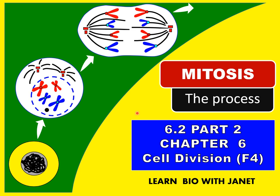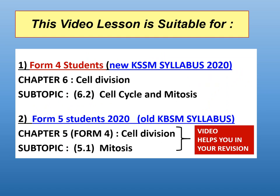This topic is from Chapter 6 of the KSSM Form 4 Syllabus, and the title of this chapter is Cell Division. This video lesson is suitable for Form 4 students studying the new KSSM syllabus of 2020, covering subtopic 6.2 Cell Cycle and Mitosis. Form 5 students of 2020 studying the old KBSM syllabus can also use this video, as the contents are very similar — the chapter involved is Chapter 5 Cell Division, subtopic 5.1 Mitosis.